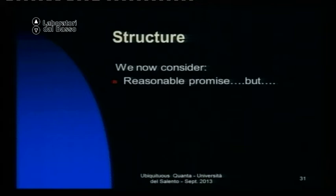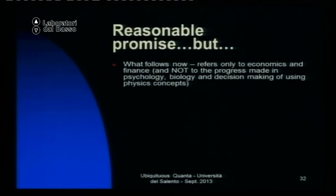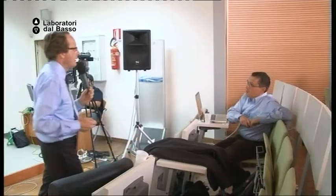Journal of Mathematical Psychology is a quite respected journal in the psychology community and has hosted quite a lot of papers in the area. Psychological Science is another very famous journal in psychology which has hosted papers on this topic. Journal of Theoretical Biology has hosted work too. In economics, I still have to see it. What I was going to mention is that in psychology, pretty much the empirical part of psychology started from physicists.